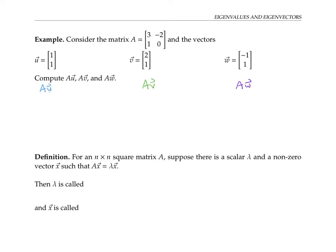To compute A times u, we need to multiply our matrix by the vector [1, 1]. The result is [1, 1]. Now that's a little weird — we multiplied by this vector u and got back the same vector u. In other words, A times u is equal to u.